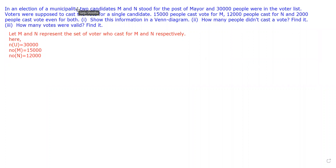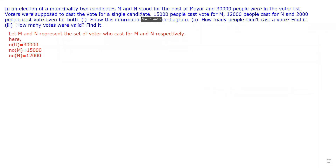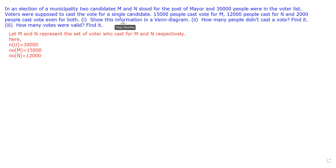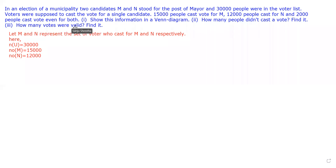In an election of a municipality, two candidates M and N stood for the post of mayor, and 30,000 were in the voter list. Voters were supposed to cast the vote for a single candidate. 15,000 people cast vote for M, 12,000 people cast vote for N, and 2,000 people cast vote for even both. We have to show this information in a Venn diagram, find how many people did not cast a vote, and find how many voters' votes were valid.